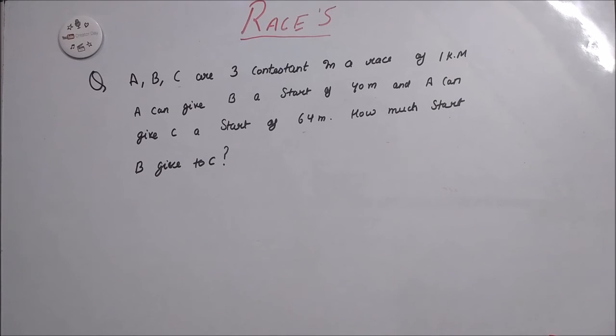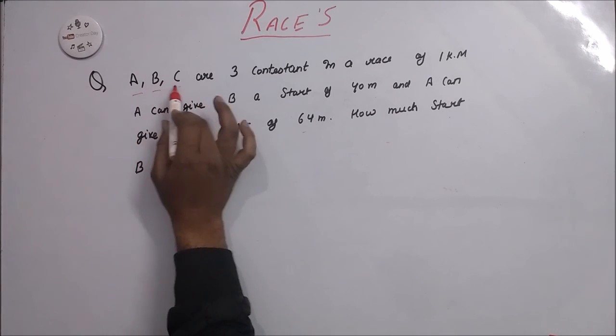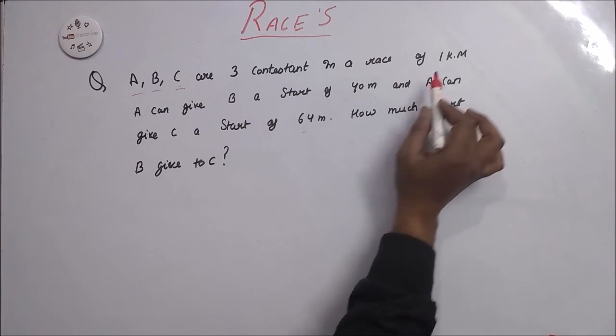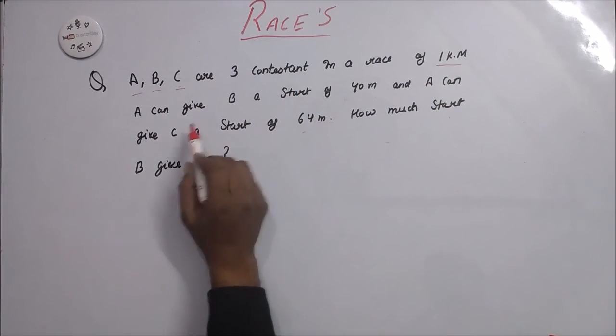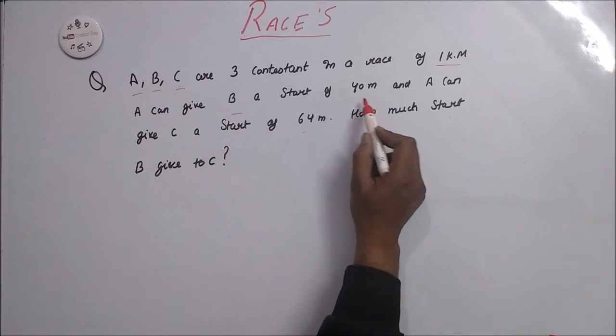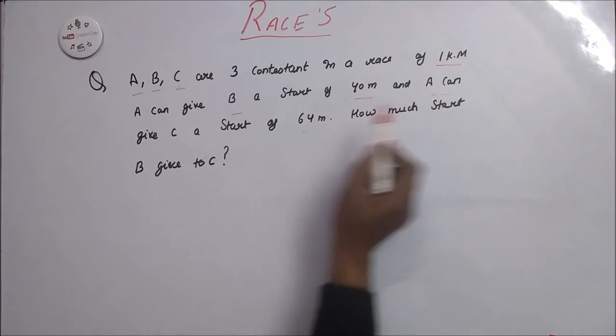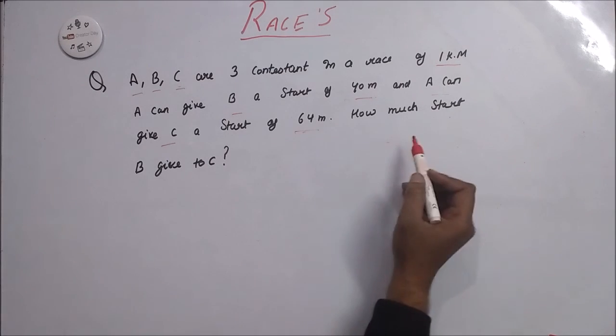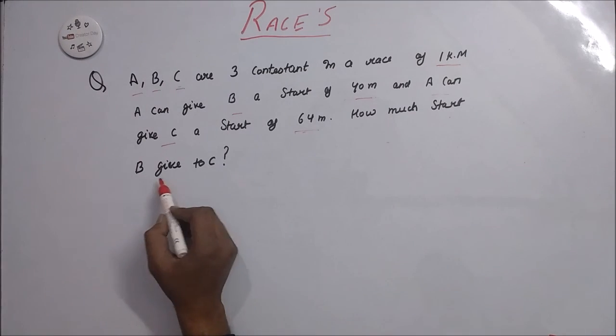Now here is the question. You have to do it by your own. In this question, A, B, C are three contestants in a 1 kilometer race. A can give B a start of 40 meters and A can give C a start of 64 meters. How much start does B give to C?